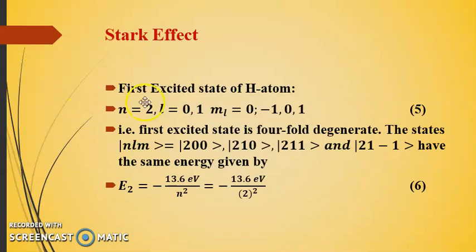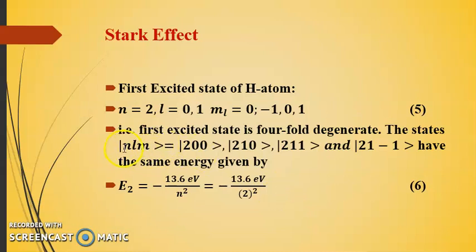The first excited state of the hydrogen atom is characterized by n = 2, with l = 0 and m_l = 0, or l = 1 and m_l = −1, 0, 1. All these states have the same energy E₂ = −13.6 eV / n² = −13.6 eV / 4, and are characterized by the kets |2,0,0⟩, |2,1,0⟩, |2,1,1⟩, and |2,1,−1⟩. Since all four different states belong to the same energy eigenvalue, there is a fourfold degeneracy in the first excited state.